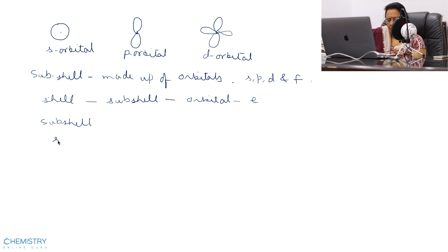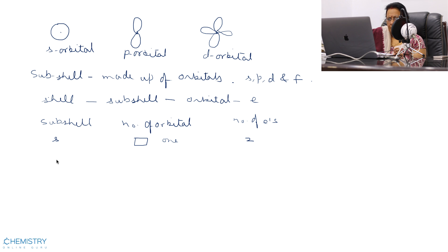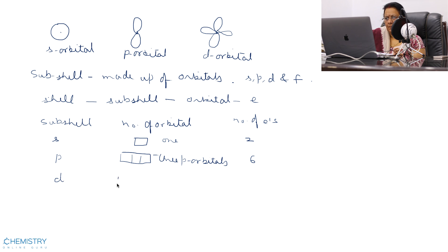In the S subshell, the number of orbitals is 1 and the number of electrons is 2. In the P subshell, there are 3 orbitals and 6 electrons. In the D subshell, there are 5 orbitals.